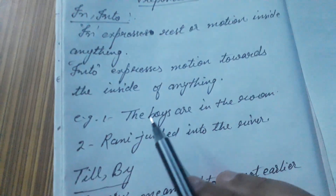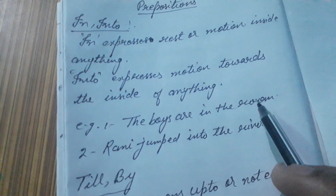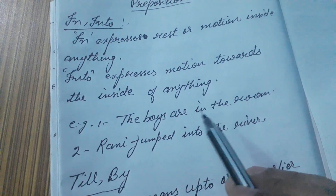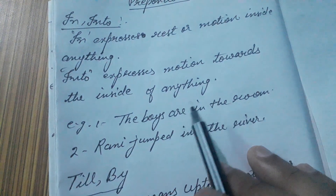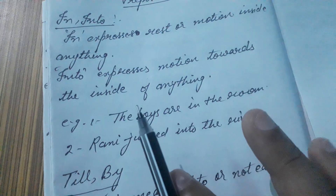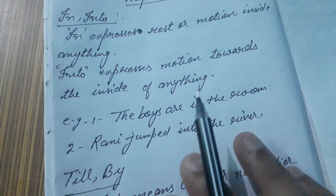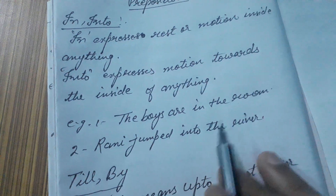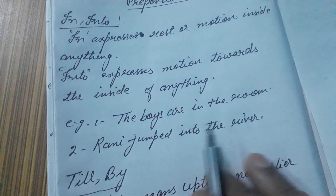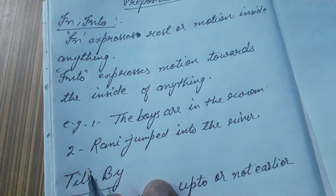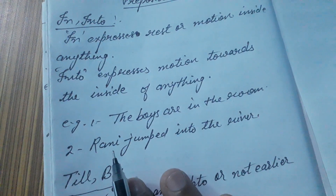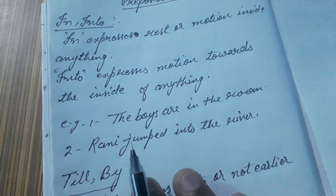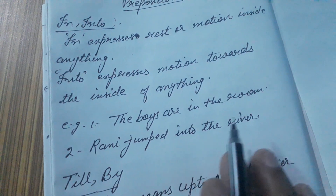For example, 'The boys are in the room' means the boys are inside the room — they are not coming inside from anywhere else, they are already inside. 'Rani jumped into the river' means from outside the river, Rani jumped into the river, so motion towards the inside of the river is shown by using INTO.